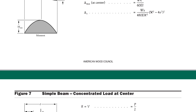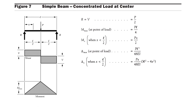Now the next condition: a simply supported beam carries a concentrated load at the center. Whenever a single concentrated load acts at the center, the maximum bending moment and maximum deflection both occur at that point. The maximum bending moment is pl/4, the maximum deflection is pl³/48EI, and the reactions at both ends are equal to P/2.